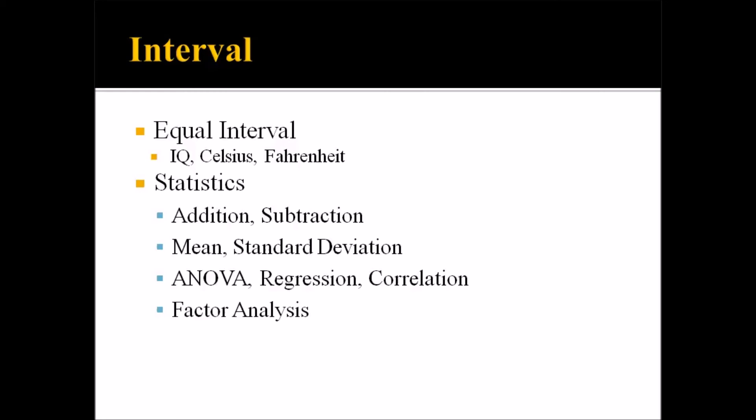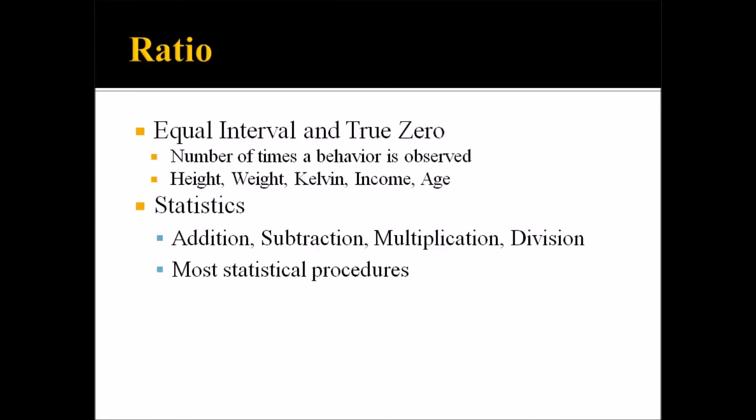This concept of true zero brings me to the ratio level of measurement. At the ratio level of measurement, we have an equal interval and a true zero. A common example would be the number of times a behavior is observed. If you measured participants and one had five anger outbursts in a week and another had 10, you have equal interval, meaning the difference between 5 and 10 is the same as the difference between 10 and 15. And you can also calculate how many times one event for a participant occurred versus another.